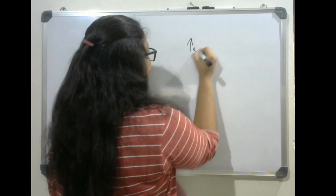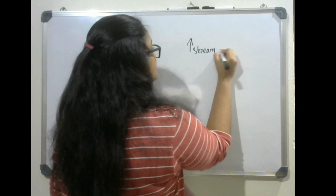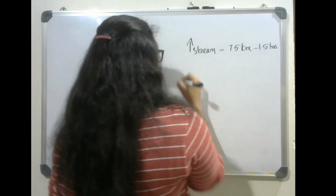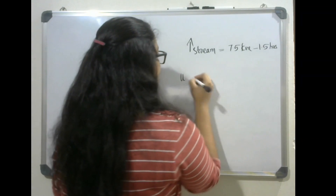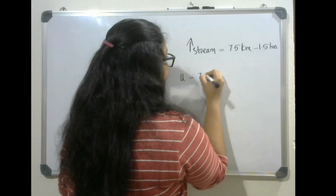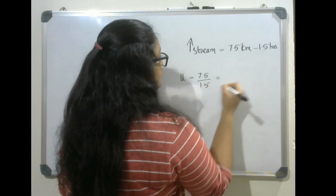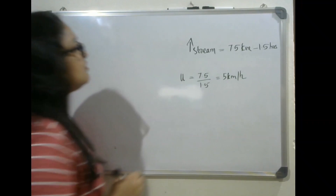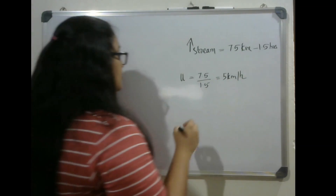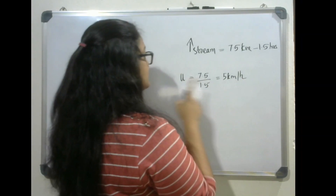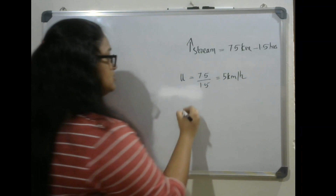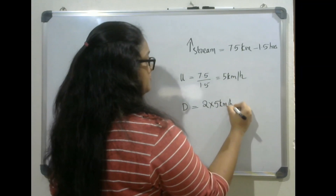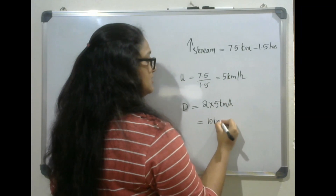Upstream distance is 7.5 kilometers in 1.5 hours. So upstream speed equals 7.5 divided by 1.5, which equals 5 kilometers per hour. From the question we know that downstream speed will be two times the upstream speed, which means downstream speed equals 2 into 5 kilometers per hour, that equals 10 kilometers per hour.